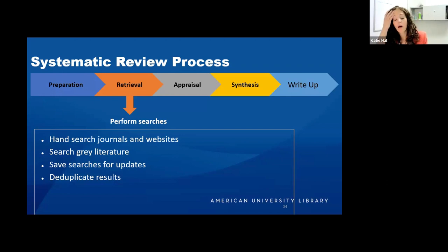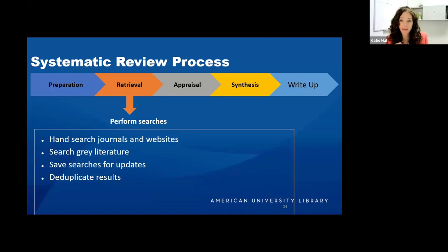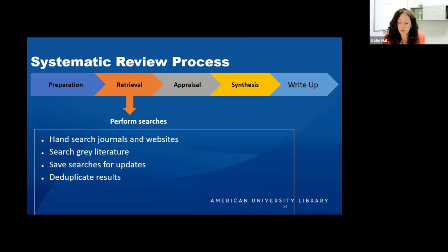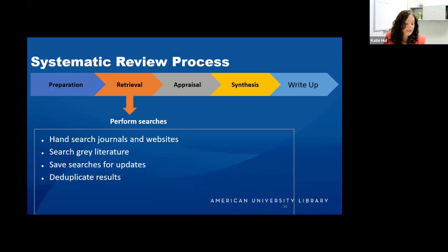Gray literature searching is really important, particularly in qualitative studies, especially those looking at underrepresented groups who may have been left out of commercial publishing. You'll want to save your searches and update them. There are different methods for updating your search — most are database-specific — but really you just want to avoid having to re-screen all the same results all over again. Some databases allow you to filter by date added to the database, not date published.